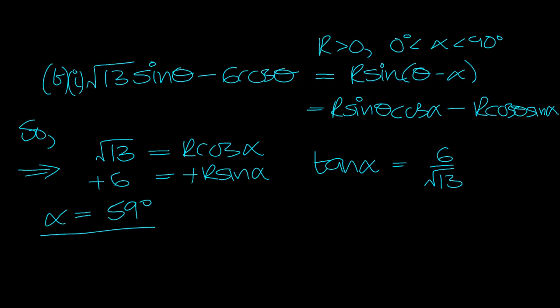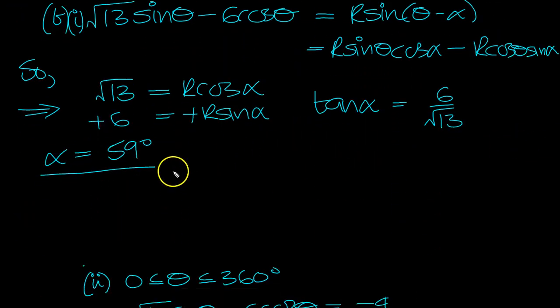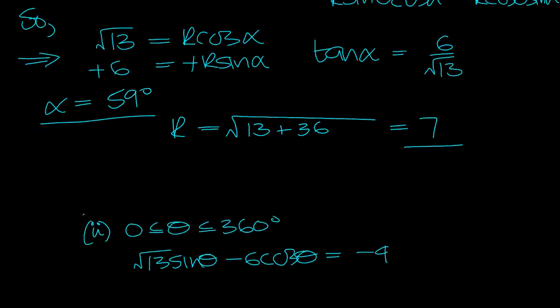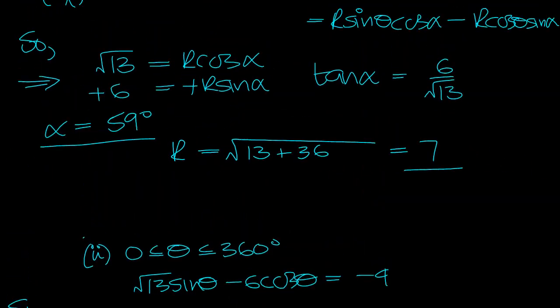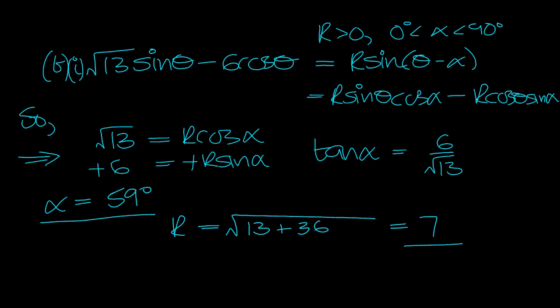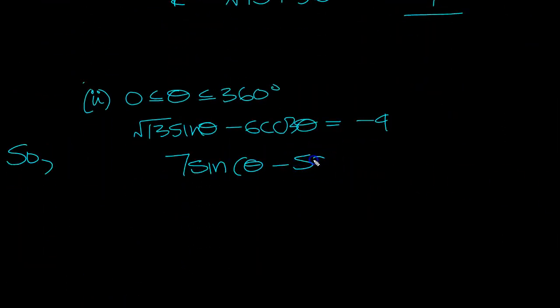And then R will equal the square root of this squared is 13 plus this squared is 36, which is 49, which is 7. So part B, 7 sin theta minus 59 degrees is what we put in here.